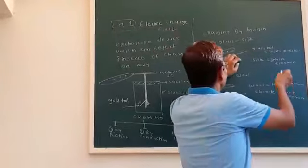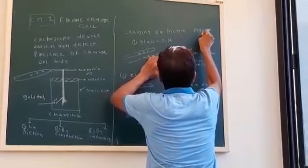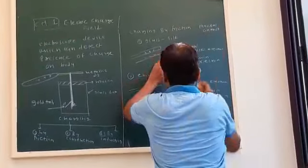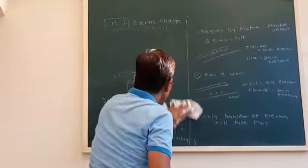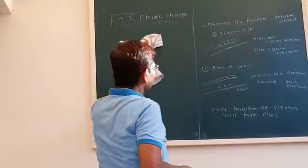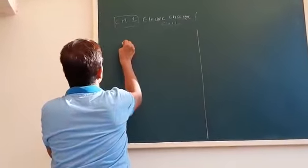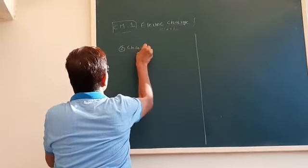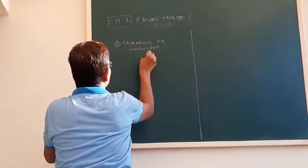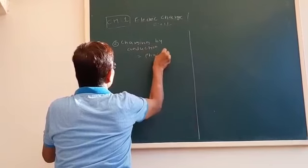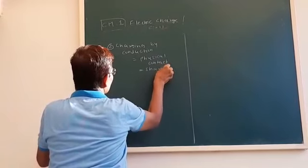In charging by friction there is a physical contact between the bodies and a transfer of electrons takes place. In charging by conduction, there is also a physical contact, and there will be sharing of charge.